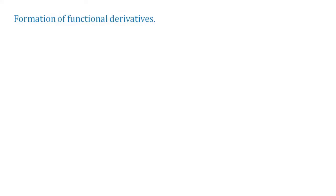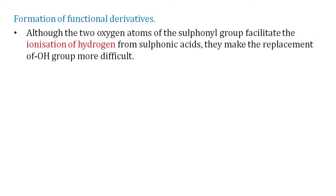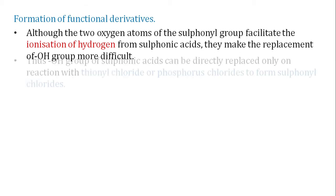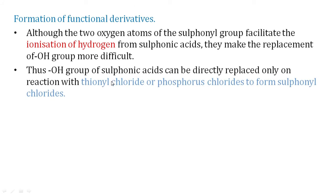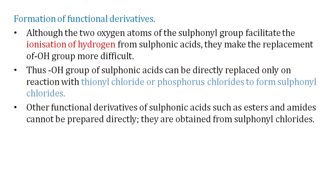Next is the formation of functional derivatives. In the sulfonate group, two oxygen atoms facilitate the ionization of hydrogen. However, the OH group is very difficult to ionize directly. To replace the OH group, we use thionyl chloride or phosphorus chloride, which convert it to sulfonyl chloride. Esters and amides are not directly prepared but can be made through sulfonyl chloride.